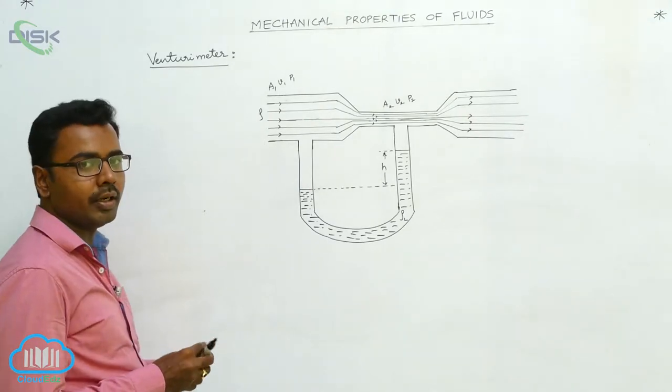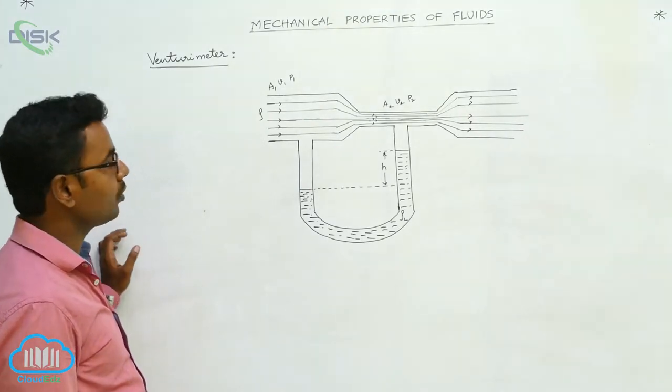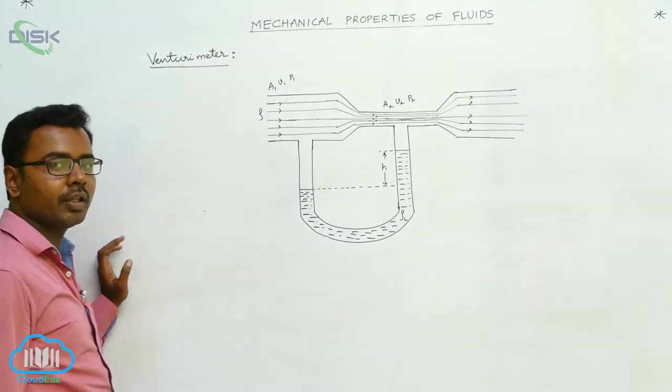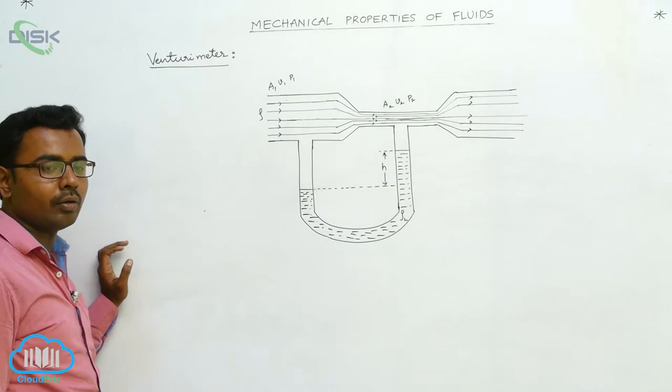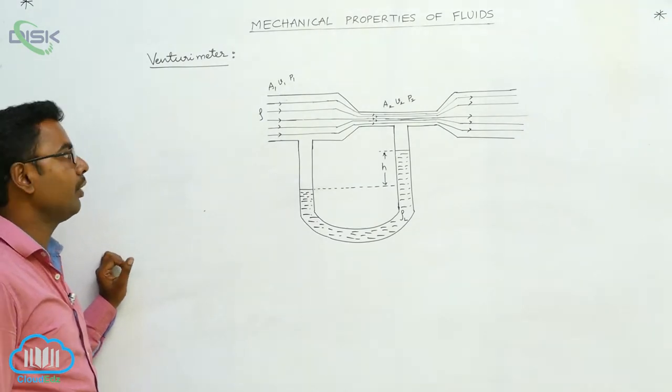Here we discuss about a device, the venturimeter, which is used to measure the rate of fluid flow and also the velocity of fluid flow.